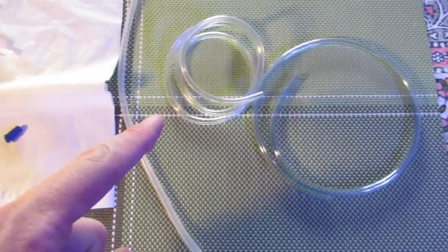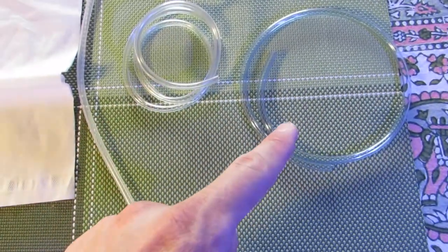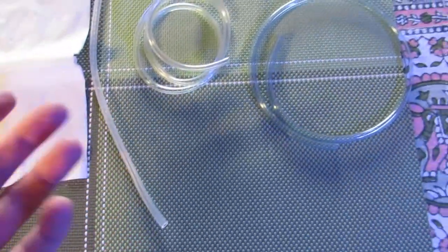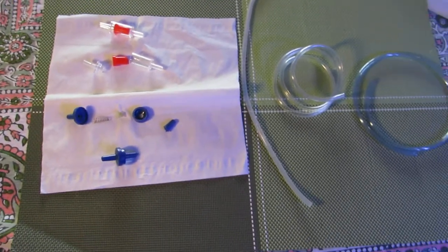So just remember, when you need more line, get the Mini Airline Tubing. And from what I can measure, this is three and that's four mils. I'm probably off a bit, but that's roughly what it is. And that one mil does make all the difference.